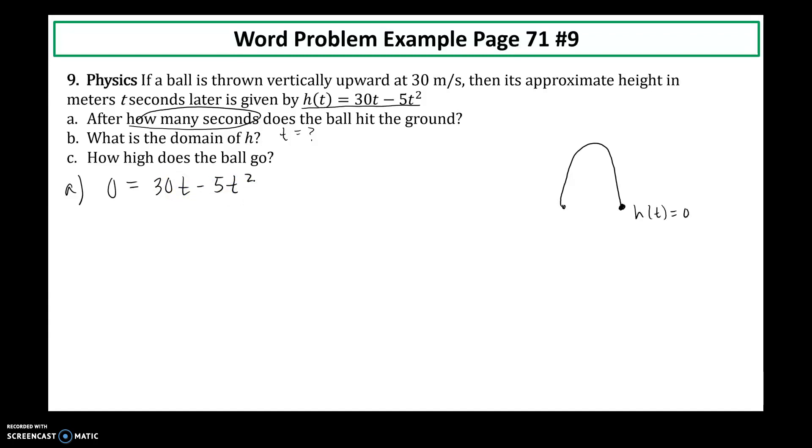It's already in quadratic form. So I'm going to take out a greatest common factor of negative 5t. That leaves me with negative 6 plus t. Setting each factor equal to 0. I get time is equal to 0. And then I get time is equal to 6. So after how many seconds will the ball hit the ground? After 6 seconds, the ball will have been thrown up and come back down and hit the ground. And then I get time is equal to 0.